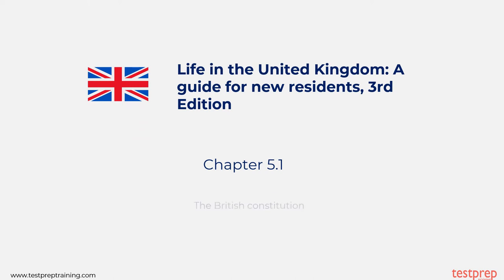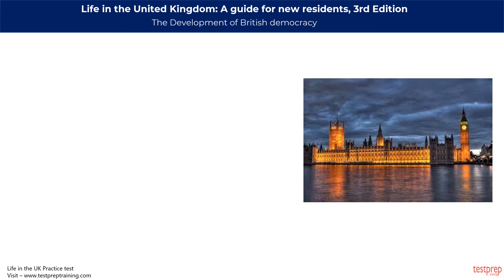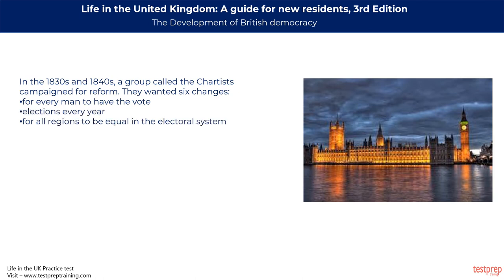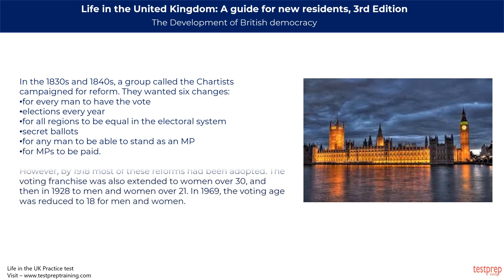The first topic is the British Constitution and the development of British democracy. Democracy is a system of government where the whole adult population gets a say, either by direct voting or by choosing representatives to make decisions on their behalf. In the 1830s and 1840s, the Chartists campaigned for reform, wanting six changes: every man to have the vote, elections every year, equal regions in the electoral system, secret ballots, any man able to stand as an MP, and MPs to be paid. Although seen as a failure at the time, by 1918 most reforms had been adopted. The vote was extended to women over 30, then in 1928 to men and women over 21, and in 1969 the voting age was reduced to 18.